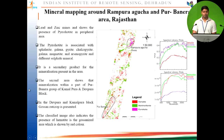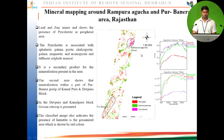Mineral mapping can be done using hyperspectral data. Hyperion data was used for mineral mapping of lead and zinc mines, showing the presence of pyrrhotite in peripheral areas. Three minerals — hematite, pyrrhotite, and montmorillonite — were classified in two particular mines: Rampura Agucha mines containing lead and zinc minerals, and another mine where hematite content and other minerals are clearly visible.